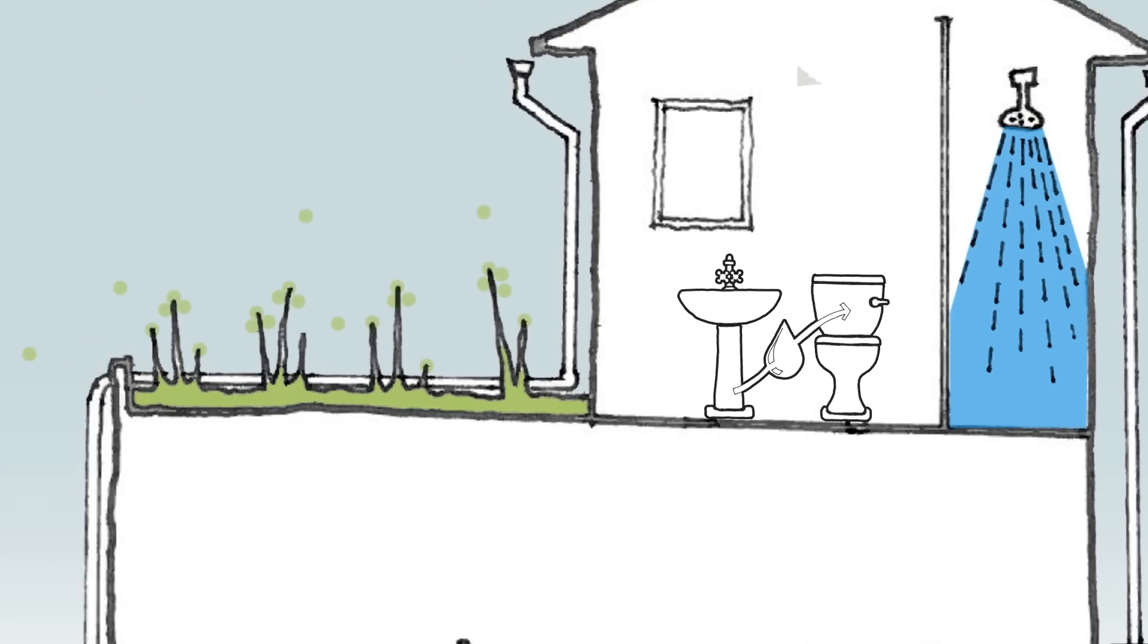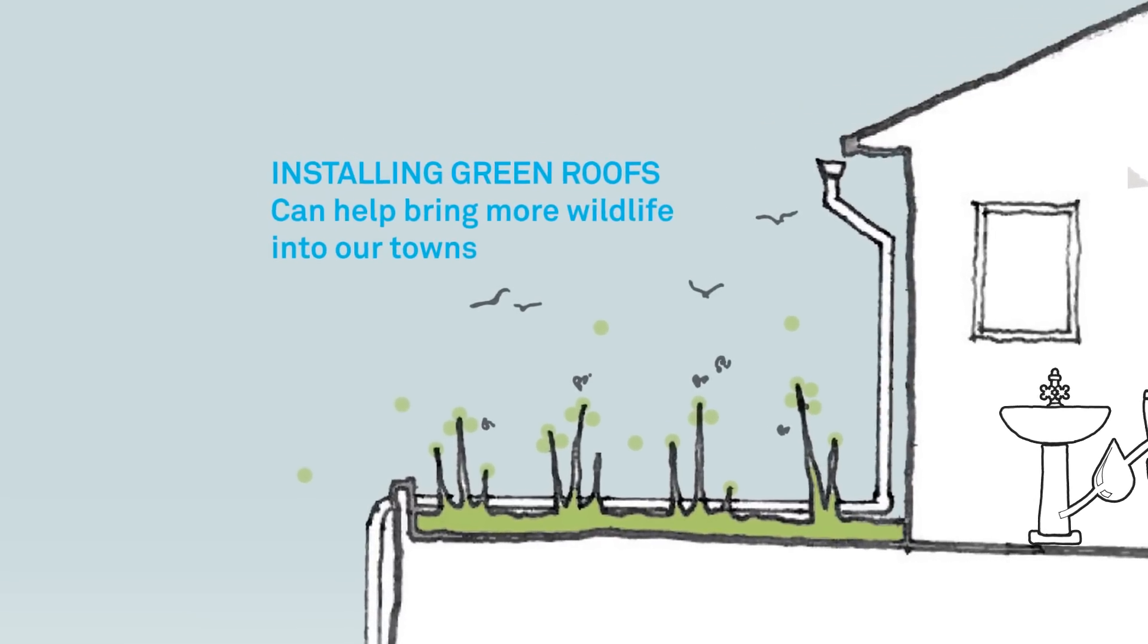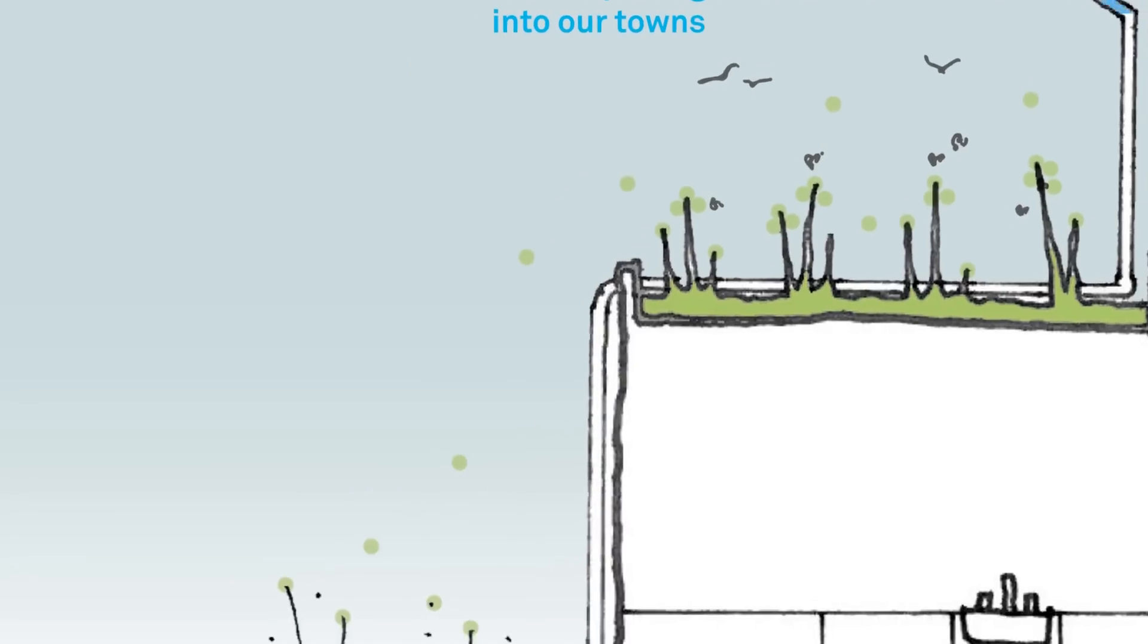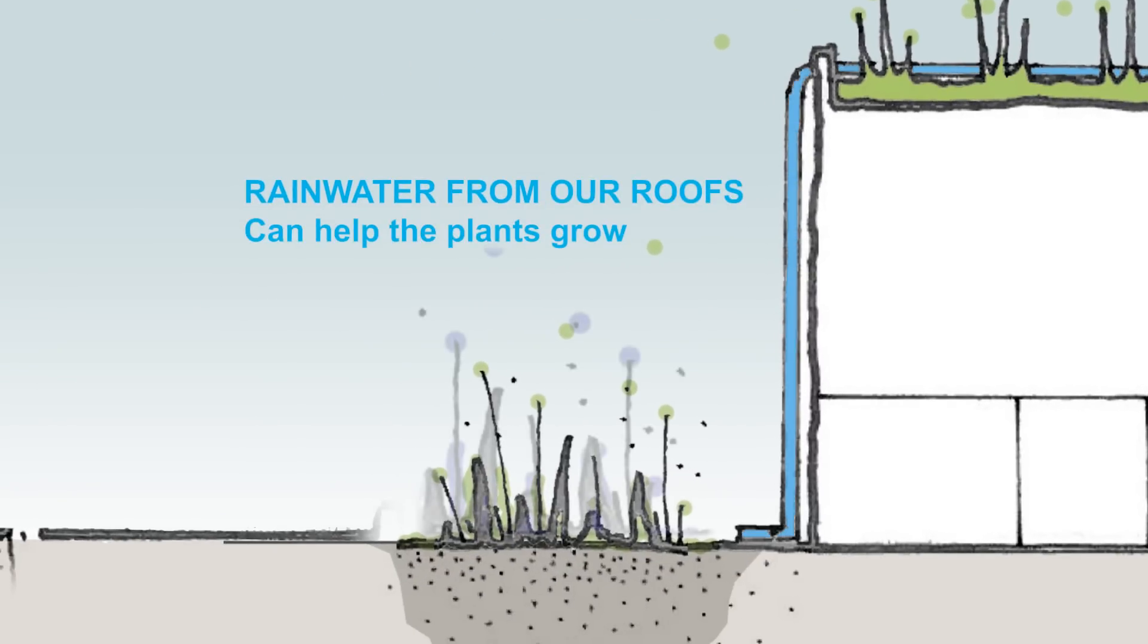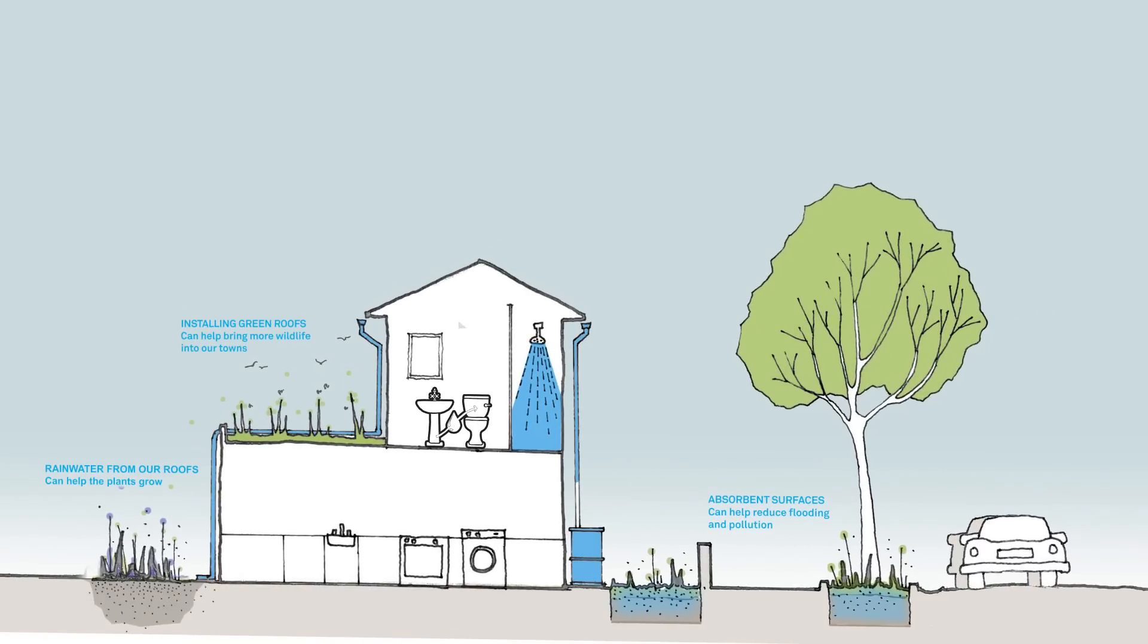Using our roofs for gardens and plants can help bring more wildlife into our towns and cities. And rainwater from our roofs can go straight into our gardens to help the plants grow. There are lots of useful things we can do to use rainwater instead of letting it run away in pipes.